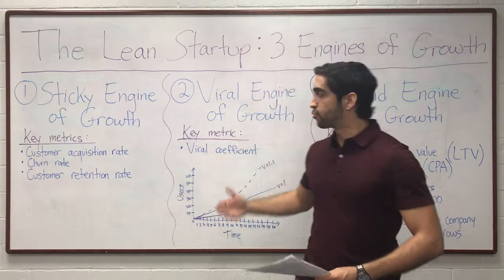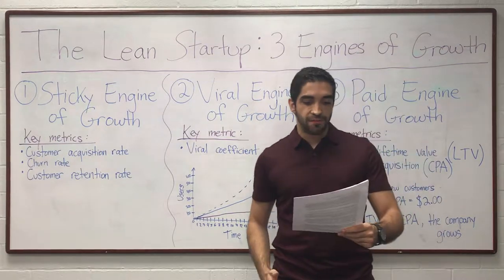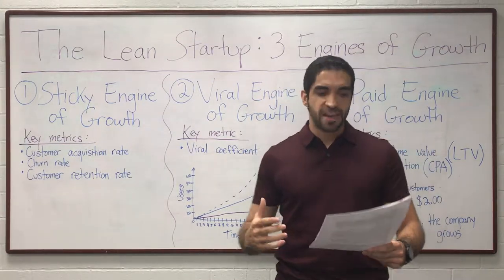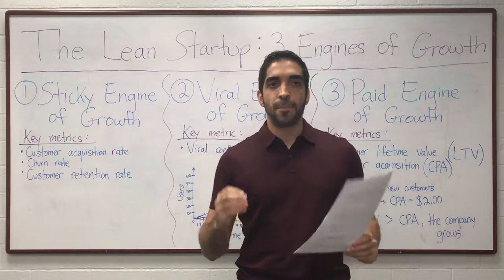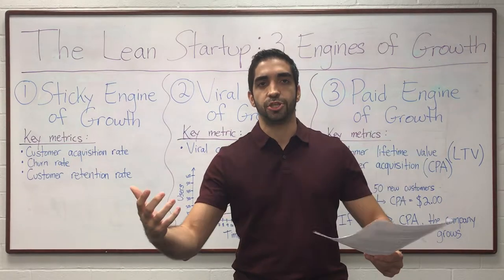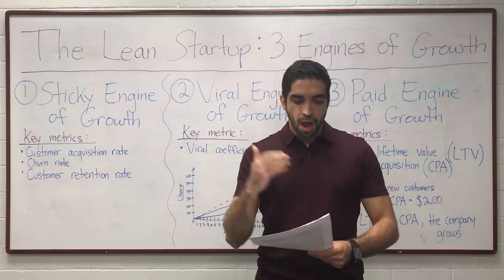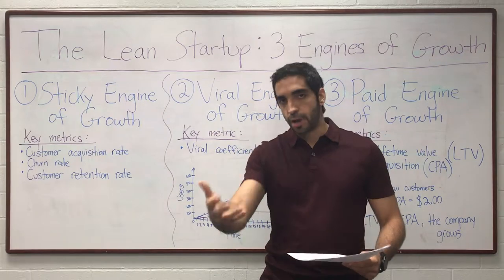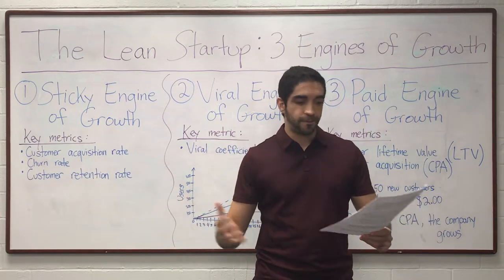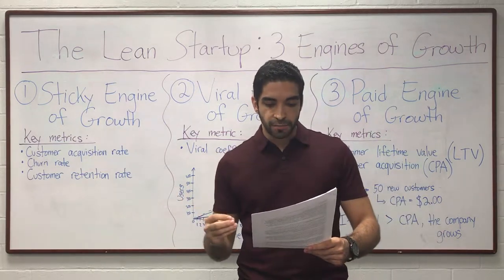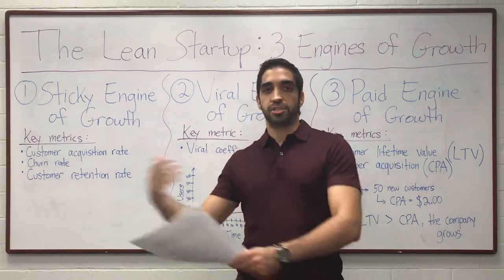The second engine of growth is called the viral engine of growth. Companies using this engine are powered by a feedback loop called the viral loop, and its speed is determined by a mathematical term called the viral coefficient. The viral coefficient is a numerical measure of how much virality the product has — the higher the coefficient, the faster the product will spread. It measures how many new customers will use a product as a consequence of each new customer who signs up.